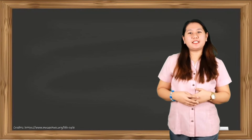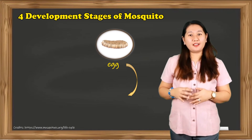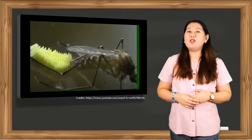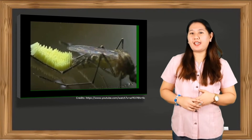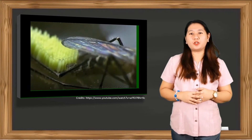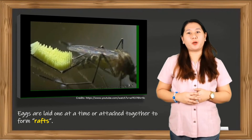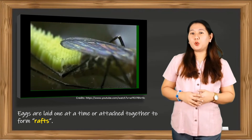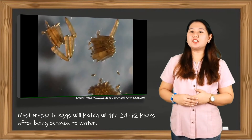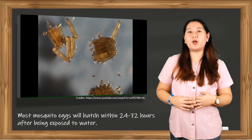The mosquito life cycle has four development stages: egg, larva, pupa, and adult. During the mosquito breeding cycle, the female adults lay their eggs in stagnant water. Eggs are laid one at a time or attached together to form rafts, and they float on the surface of the water. Most mosquito eggs will hatch within 24 to 72 hours after being exposed to water.